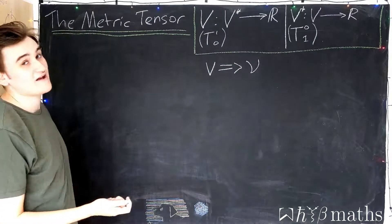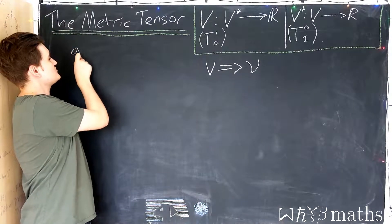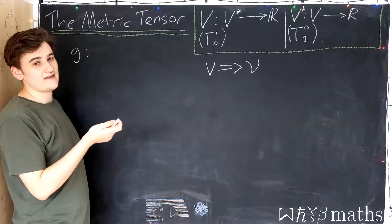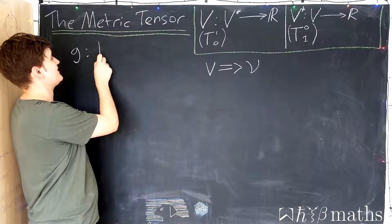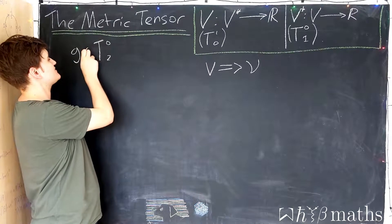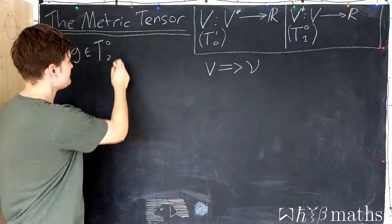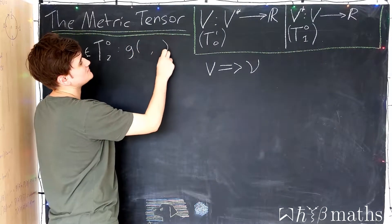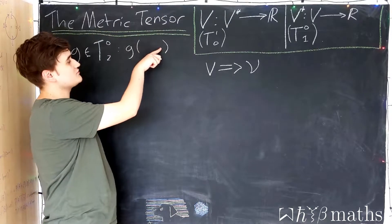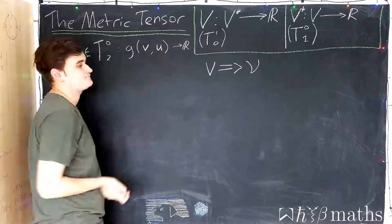So the metric tensor, which I'm going to call G, is a special type of (0,2) tensor. So it lives in the space T(0,2). So we know this means that it's an object effectively with two slots waiting to eat two vectors and give us a real number.